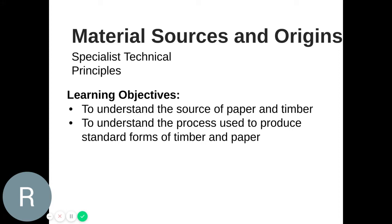Today we're going to have a look at material sourcing, origins, and the processes used to manufacture material into their standard forms. We're going to be looking at the sources of paper and timber and how to understand the processes used to produce standard forms of timber and paper. This is for your AQA GCDT exam, coming under the specialist technical principles section, where you're required to understand at least one material.